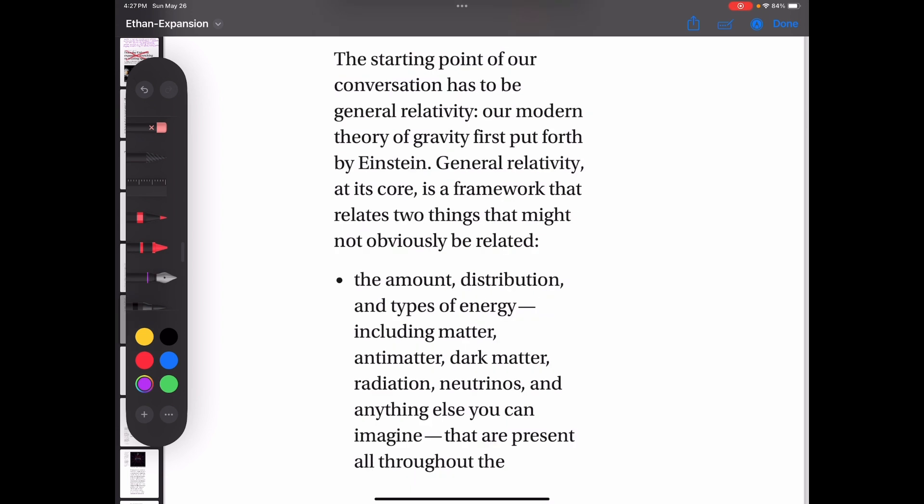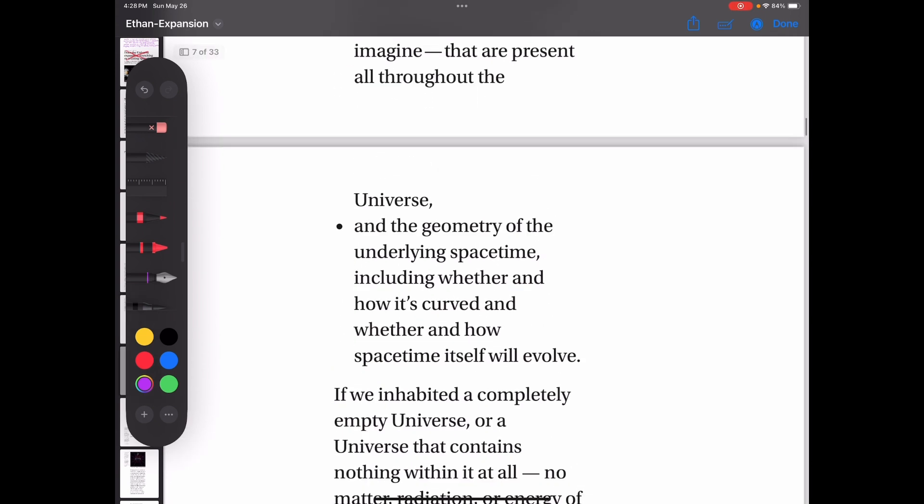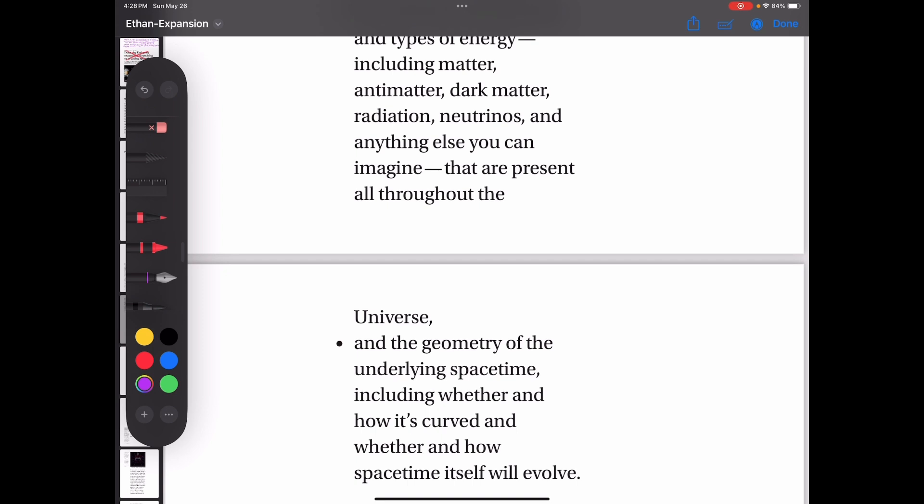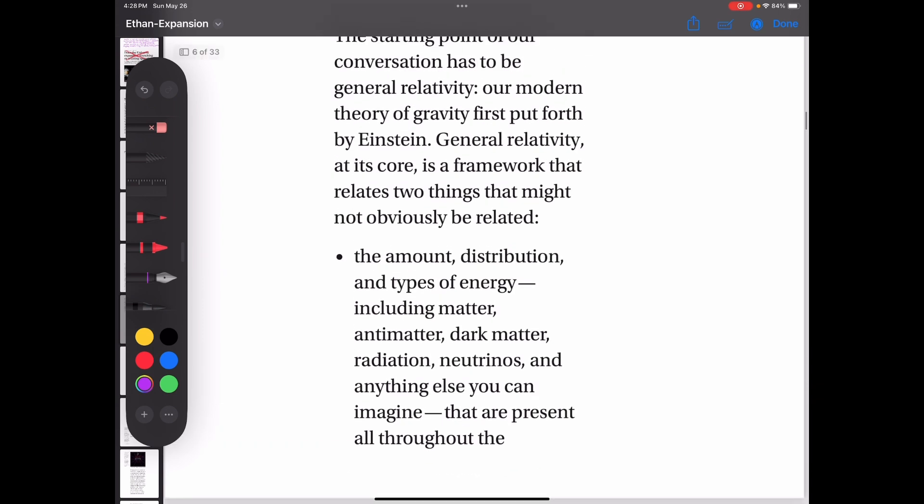In this section, Ethan's talking about general relativity and gravity, and the idea that the amount, distribution, and types of energy, including matter, antimatter, dark matter, radiation, neutrinos, and anything else you can imagine that are present all throughout the universe, and the geometry of the underlying spacetime, including whether or how it's curved and whether and how spacetime will evolve. Well, it's tough to talk about this because scientists don't know the difference between matter and antimatter. It turns out that's just a configuration of the triply nested binary core that's at the center of everything, and it can come in two varieties, a pro version and an anti version, and either one of those can spin left or right.